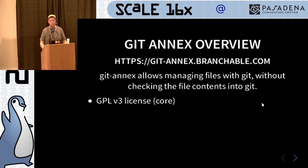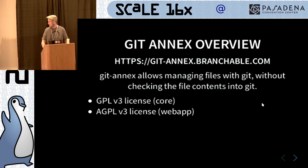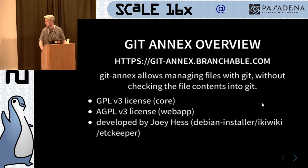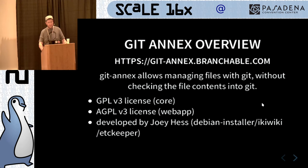The Git Annex core is GPLv3. If you like GUIs, there is a web GUI that is also GPL3 that helps you set up stuff like syncing automatically, so when one repo sees another repo they automatically exchange content. It's developed by Joey Hess — you've probably used his software: Debian installer, IckyWicky, XC Keeper, and a whole bunch of other stuff. I believe he is at JoeyH.name if you want to know more.